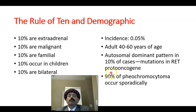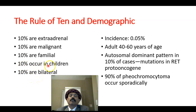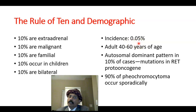In 10% of cases there is a mutation in the RET proto-oncogene. Pheochromocytoma may be part of Multiple Endocrine Neoplasia type 2A, Multiple Endocrine Neoplasia type 2B, von Recklinghausen's disease, Sturge-Weber syndrome, or von Hippel-Lindau syndrome. In 10% of cases it may be bilateral, and in 10% of cases it occurs in children. 90% of pheochromocytomas occur sporadically, and 10% are due to mutation.